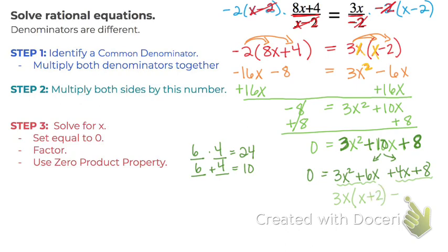In the second grouping, I can pull out a 4, I can divide them both by 4, and I'm also left with an (x plus 2).